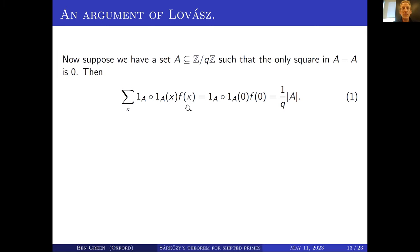F(x) is supported on the squares, and so the only place at which these two functions are both non-zero is x = 0. That explains this equality, and then by the normalizations, that's |A|/Q.